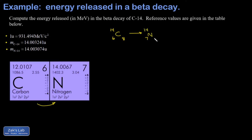When one neutron turns into a proton, we get seven protons — that's why we end up with nitrogen. We still have 14 total nucleons, meaning seven neutrons. In addition, an electron flies out, written as beta with a charge of negative one. For completeness, an electron anti-neutrino is also emitted and has negligible mass.